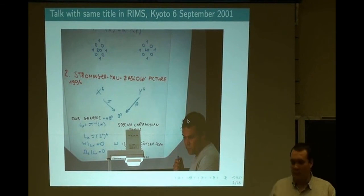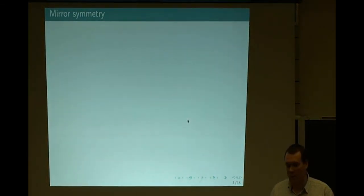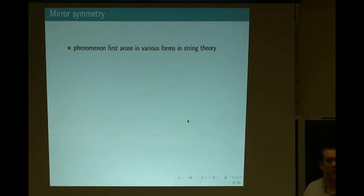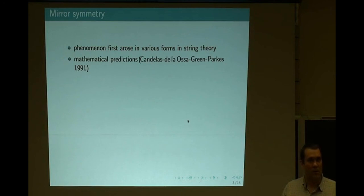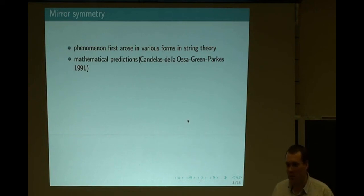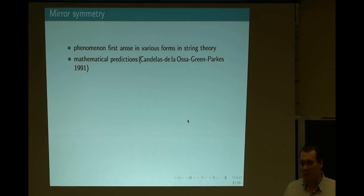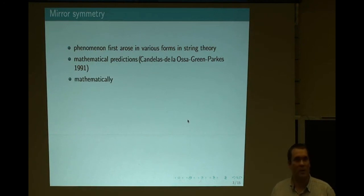Let me start with discussing mirror symmetry and giving an overview of the early history of the subject. There was not a well-defined moment when mirror symmetry appeared in the string theory literature — it was in the late 80s, with various ideas converging together. Then in the early 90s, in the work of Candelas et al., mathematical predictions were made which are really where mathematicians can relate to the subject, giving spectacular formulas for the number of rational curves in certain Calabi-Yau threefolds.